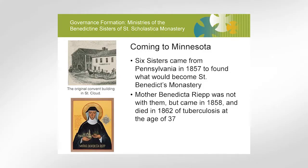Coming to Minnesota was something really dear to her heart. She wanted to expand the influence of the Benedictine sisters and monks, and knew about St. John's, so she wanted to form a women's community in St. Cloud. She was not allowed to go at that time, but six sisters left in 1857, coming first to St. Cloud before moving to St. Joseph, where they are now. She came after them in 1858, and died in 1862 of tuberculosis at the age of 37. Her grave is at St. Benedict's, and that's something we all cherish.